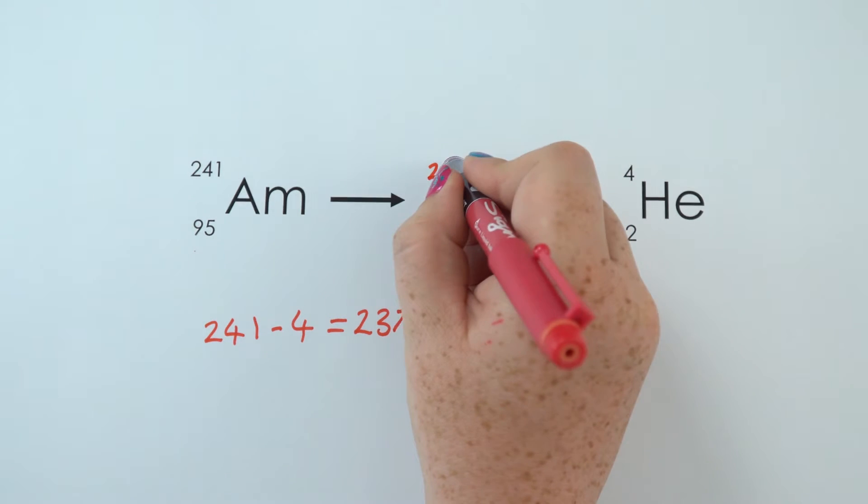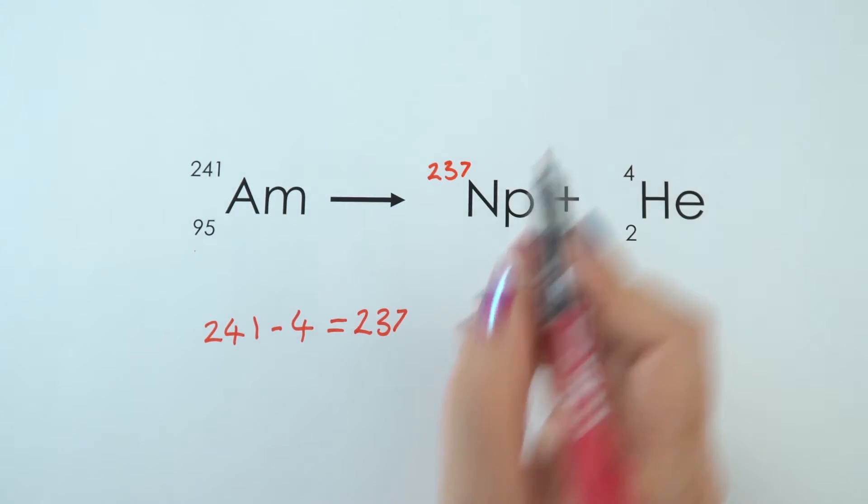So the mass of the neptunium is going to be 237. And then we need to see the atomic number, so that would be 95 minus 2, giving us 93.